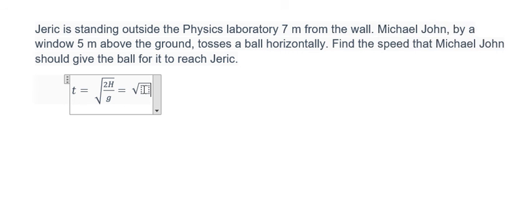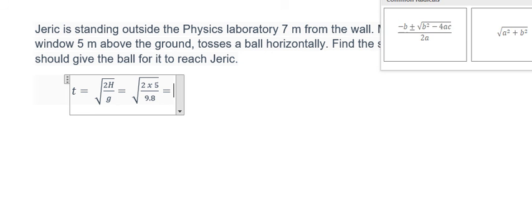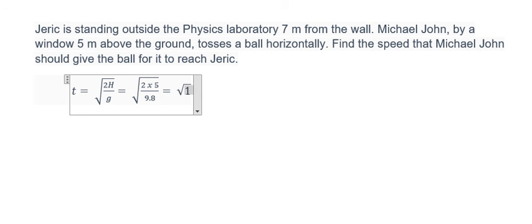And we have the number we put in here. 2 multiplied with number 5 divided by 9.8. And you got about 10 over 9.8, and this is about 1.01.